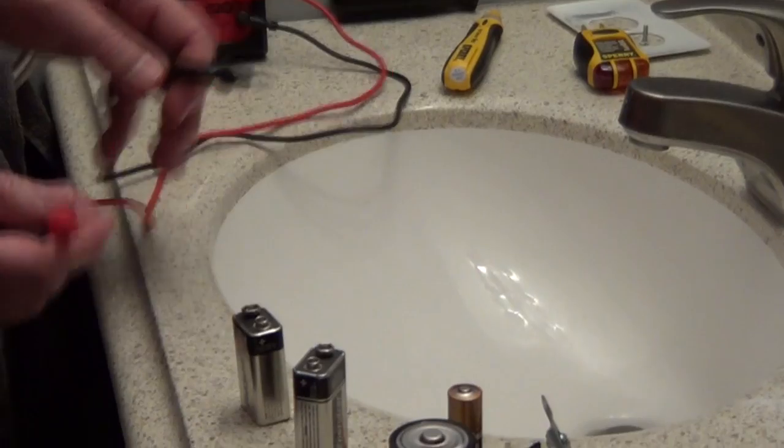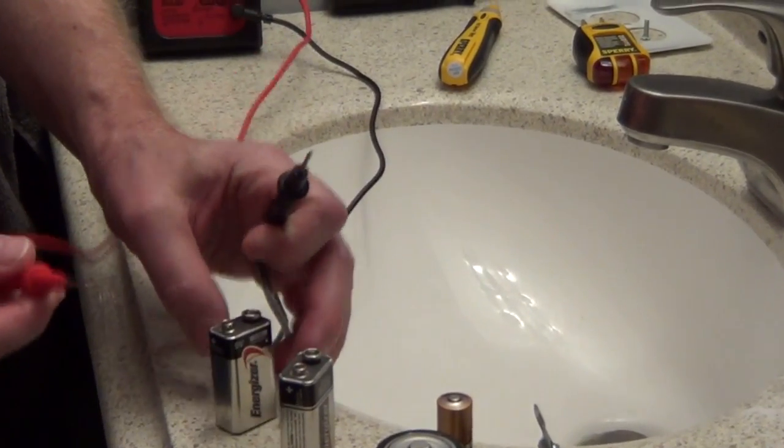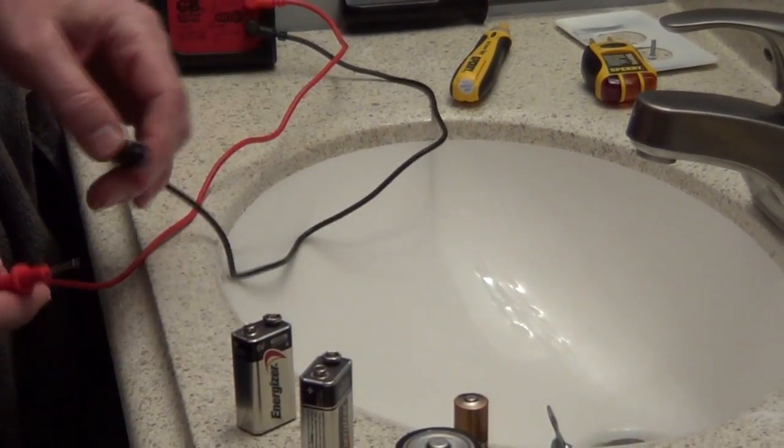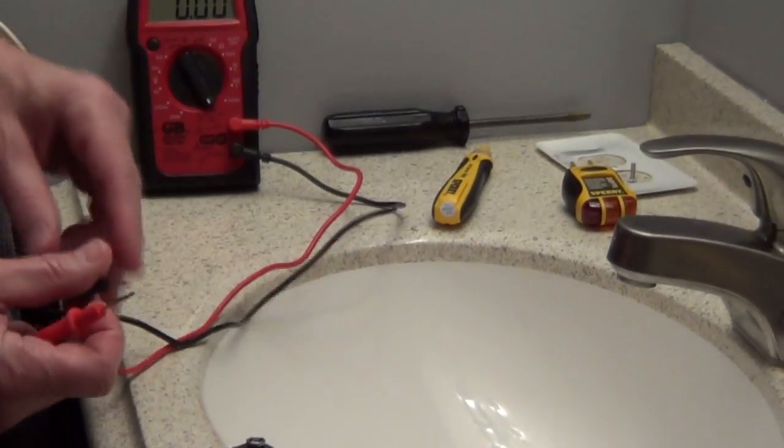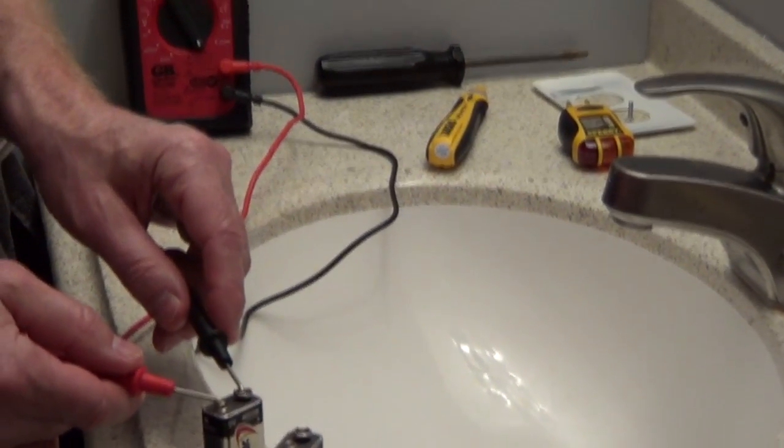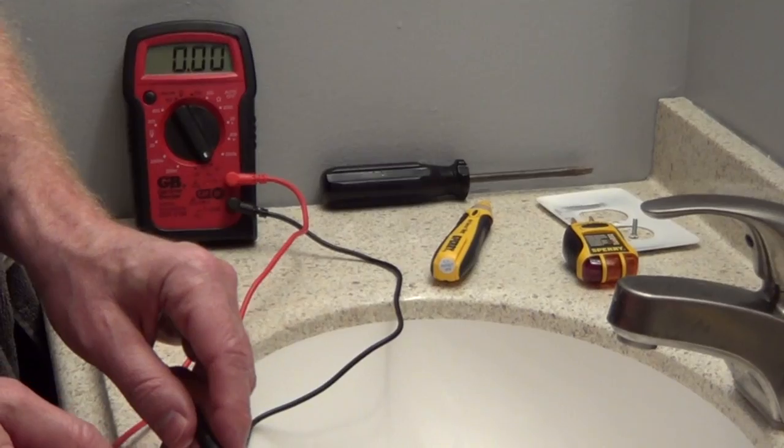When you're testing batteries you want the positive side to be on your red probe and the negative side on your black probe. So I set this to 9 volt and we just test this and you can see nothing is going on. So this is a bad battery.